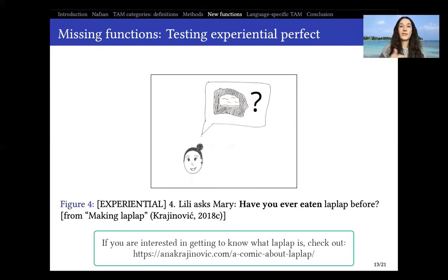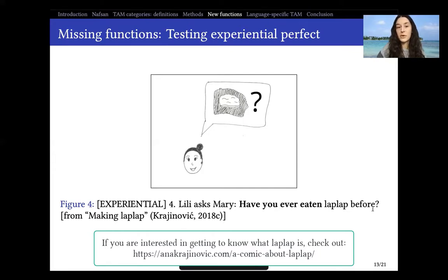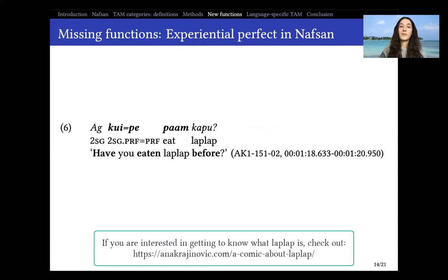In the corpus, we had the uncertainty of not knowing whether experiential and universal functions were available in Nafsan. The 'making lap lap' storyboard I created contains a frame testing the experiential function: Lily asks Mary, 'have you ever eaten lap lap before?' And this was actually said by all speakers who produced the storyboard — they all used the perfect marker P in this context: 'ang kuipe pam kapu.' So all speakers produced P in this context.